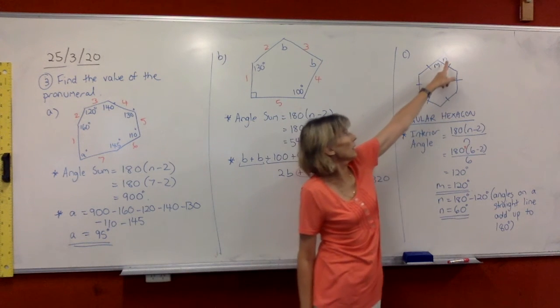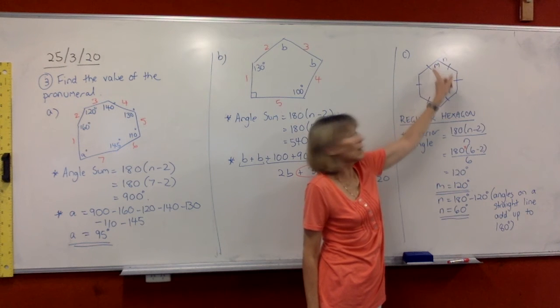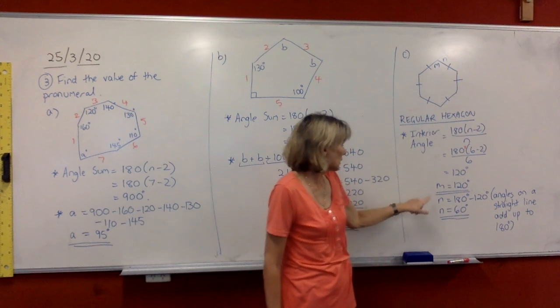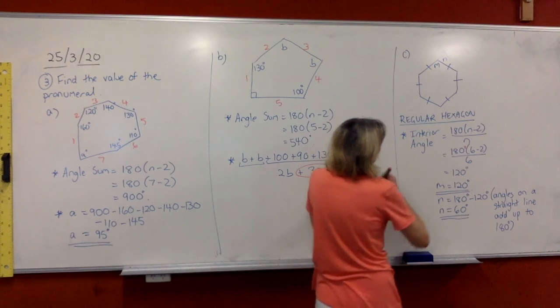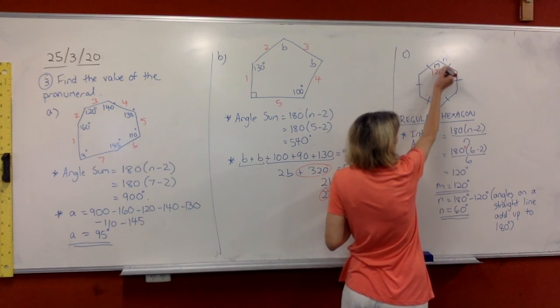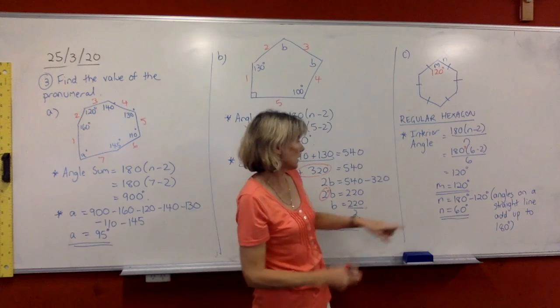To find the n out here, let's just use angle sum on a straight line. So we're just getting n by doing 180 minus the 120 that we just found for m and you get your 60 degrees.